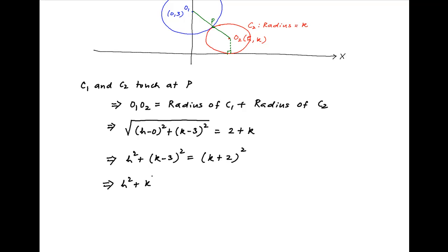This implies that h² + k² - 6k + 9 = k² + 4k + 4. The k² terms cancel on both sides, and this can be written as h² = 10k - 5.